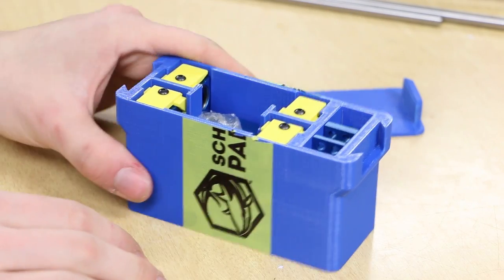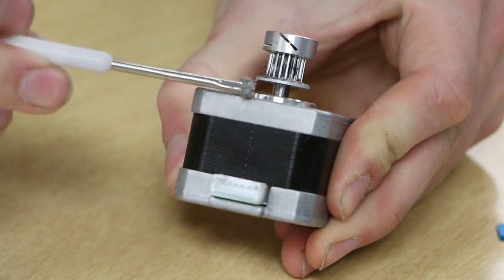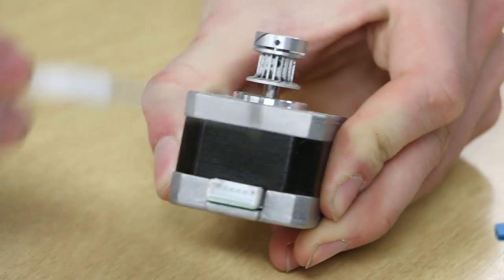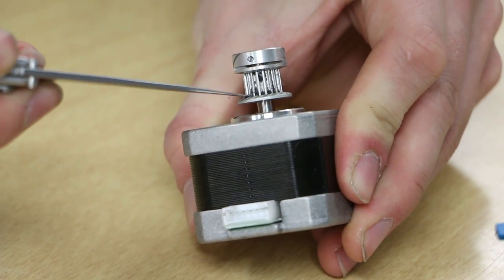Open the upgrade kit and remove its contents. Before proceeding, use a q-tip or brush to clean the X-axis motor pulley. A toothpick or knife may be used to clear the gears as well.